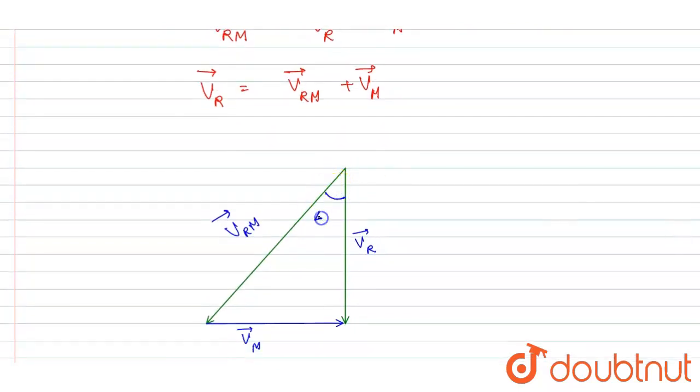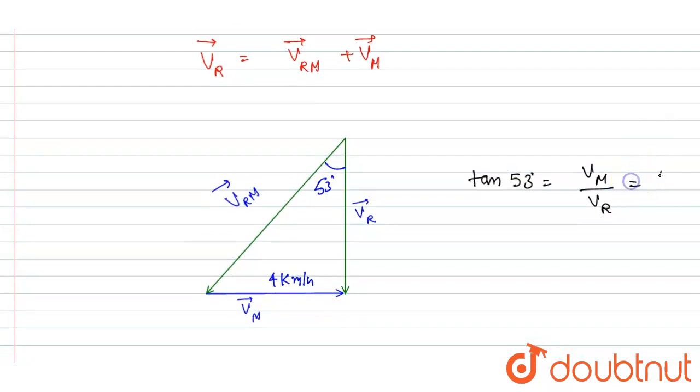So we can write down tan theta. We know that here the tan 53 degrees will be magnitude of man velocity by magnitude of the rain velocity. So tan 53 degrees is 4 by 3, and from here we get 3 by 4 times VM. VM itself is 4, so VR is 3 kilometer per hour.